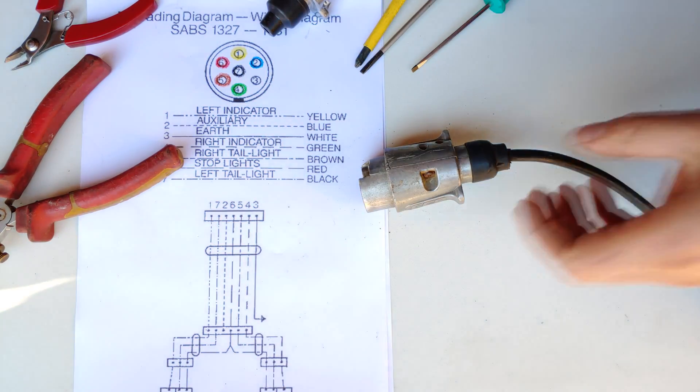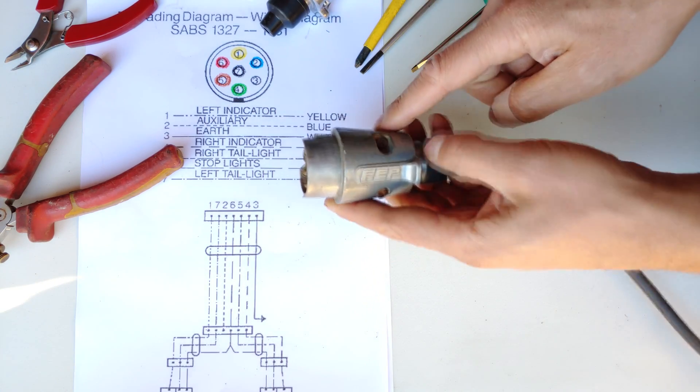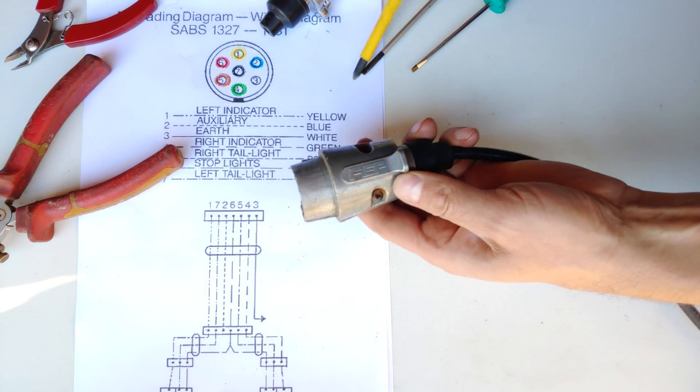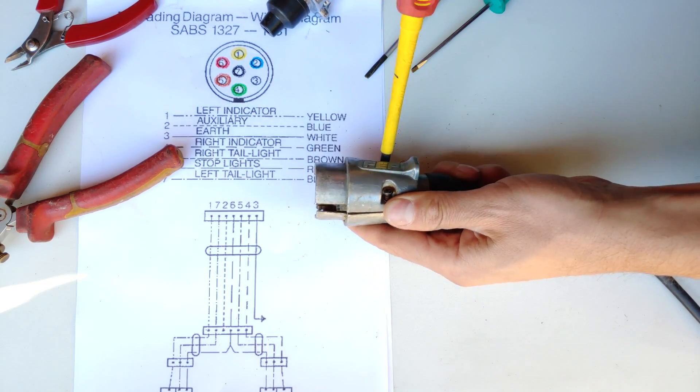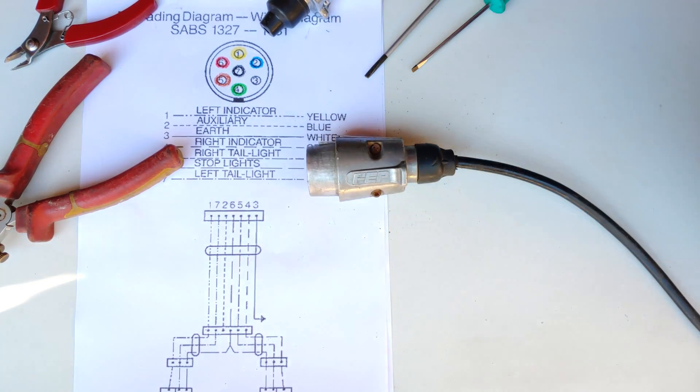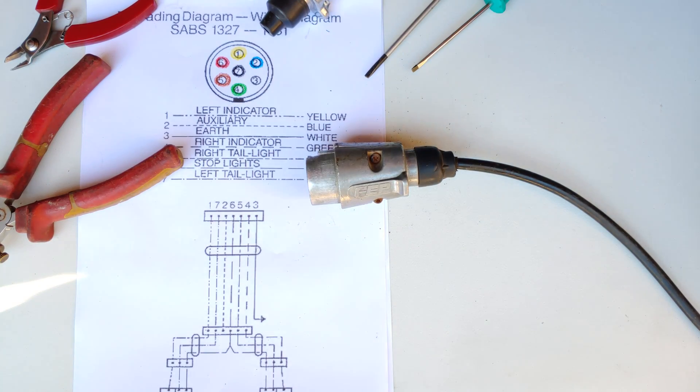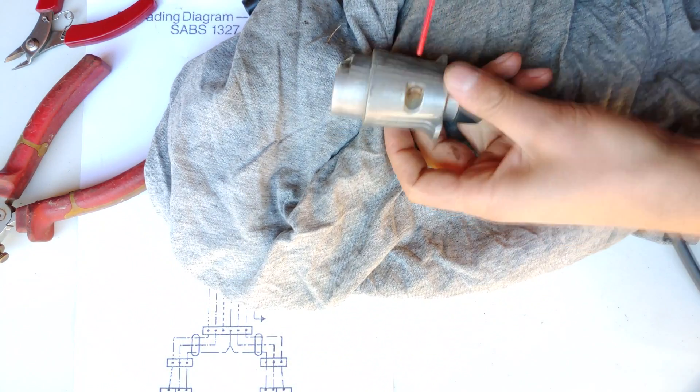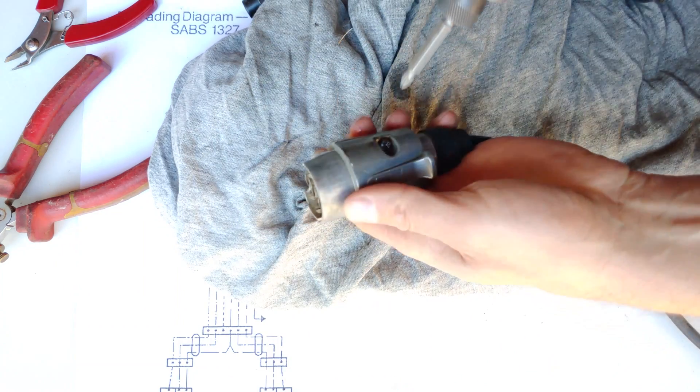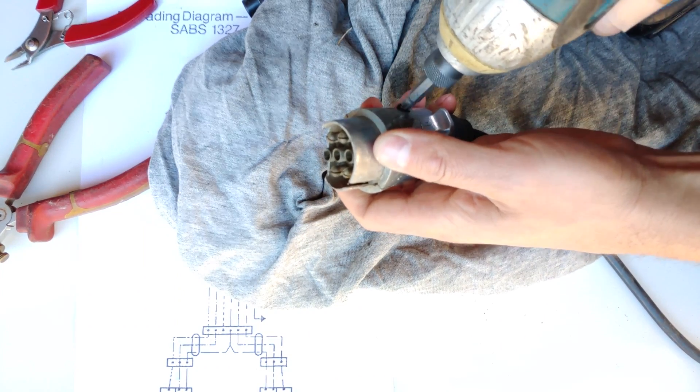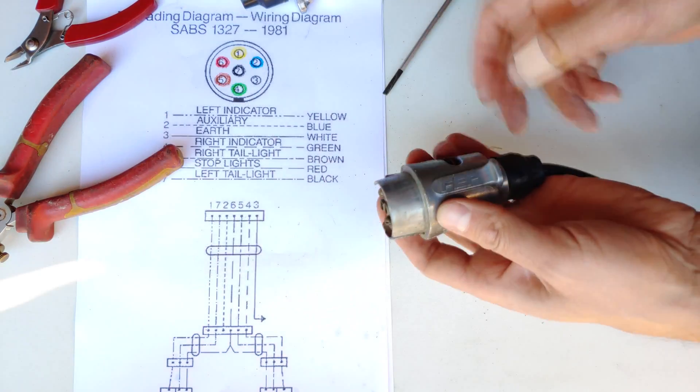The first thing you need to do is take the old one off. What you might find is that this is all rusted and might even be corroded. As you can see it's very tight, so you could just spray it with some oil.